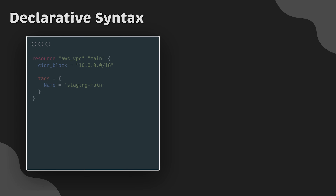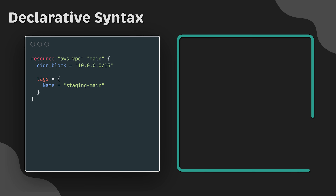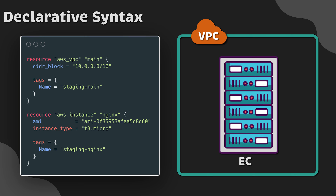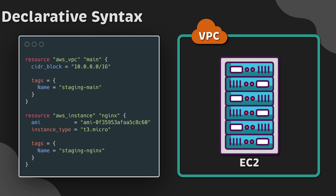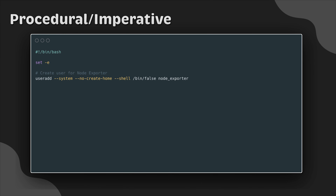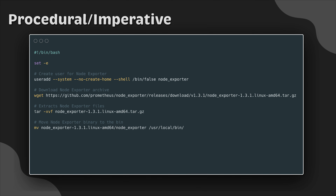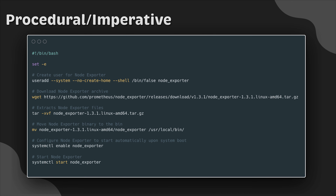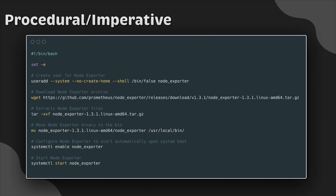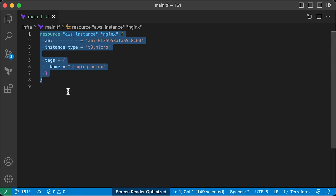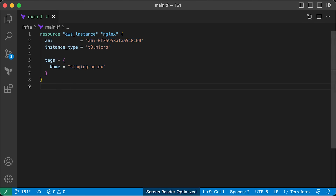Terraform uses a declarative syntax, which allows for a more accurate view of what actually deployed compared to procedural languages. In a procedural language, you describe the steps instead of the desired state of the system, so it's easier to reason about and makes it easier to keep the codebase small. Nevertheless, some tasks can be more challenging to accomplish using a declarative approach.